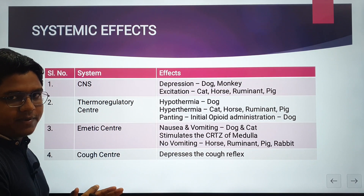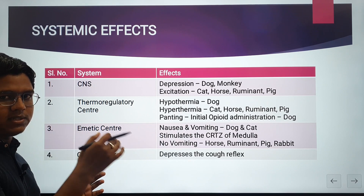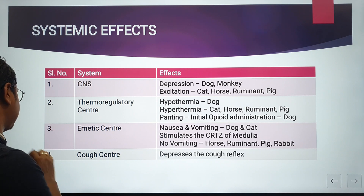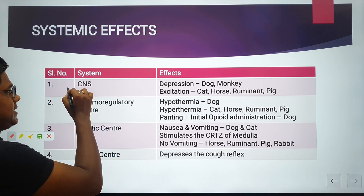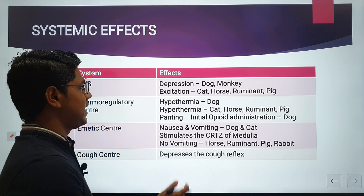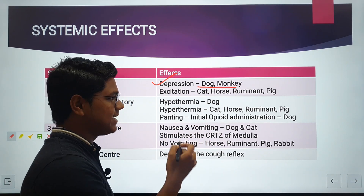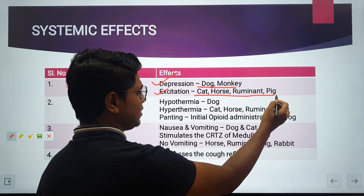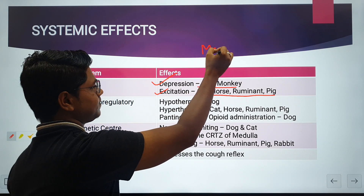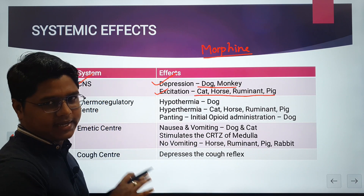Now for systemic effects — pharmacodynamics. First, CNS effects: in different species, opioids produce different actions. They cause CNS depression in dogs and monkeys, but CNS excitation in cats. In exams, you may be asked which opiate causes excitation in cats — one option will be morphine.